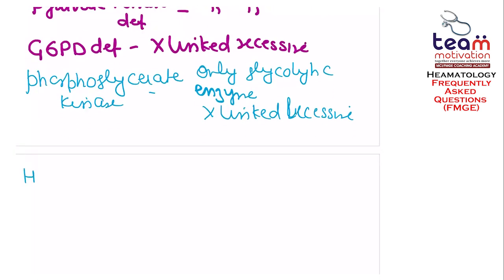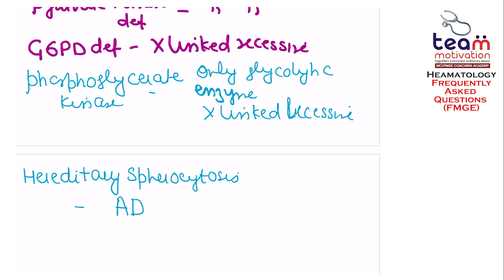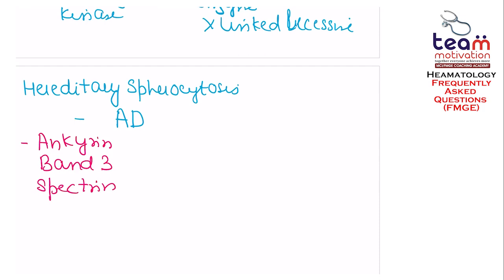In hereditary spherocytosis, you get both dominant as well as the recessive form. But if the question asks about hereditary spherocytosis, you should go in favor of autosomal dominant as it is the most common. In hereditary spherocytosis, ankyrin deficiency, band 3 deficiency, and spectrin deficiency — all three are autosomal dominant.